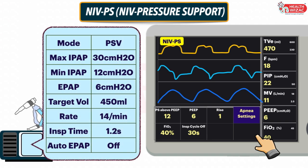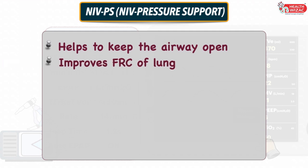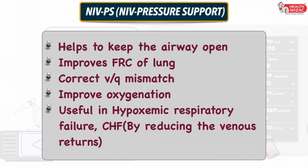On the other hand, if we use BiPAP for pressure support ventilation, we may see the PSV mode label on it. In this, we have to set: maximum IPAP value and minimum IPAP value (Inspiratory Positive Airway Pressure), EPAP value (Expiratory Positive Airway Pressure), Target Volume, Rate, Inspiratory Time, and Auto-EPAP may be turned off and on depending upon the patient's clinical condition. Key highlights: it helps keep the airway open and improves functional residual capacity of the lung, corrects VQ mismatch and improves oxygenation, and is useful in hypoxemic respiratory failure (type 1) and conditions like chronic heart failure or congestive cardiac failure.